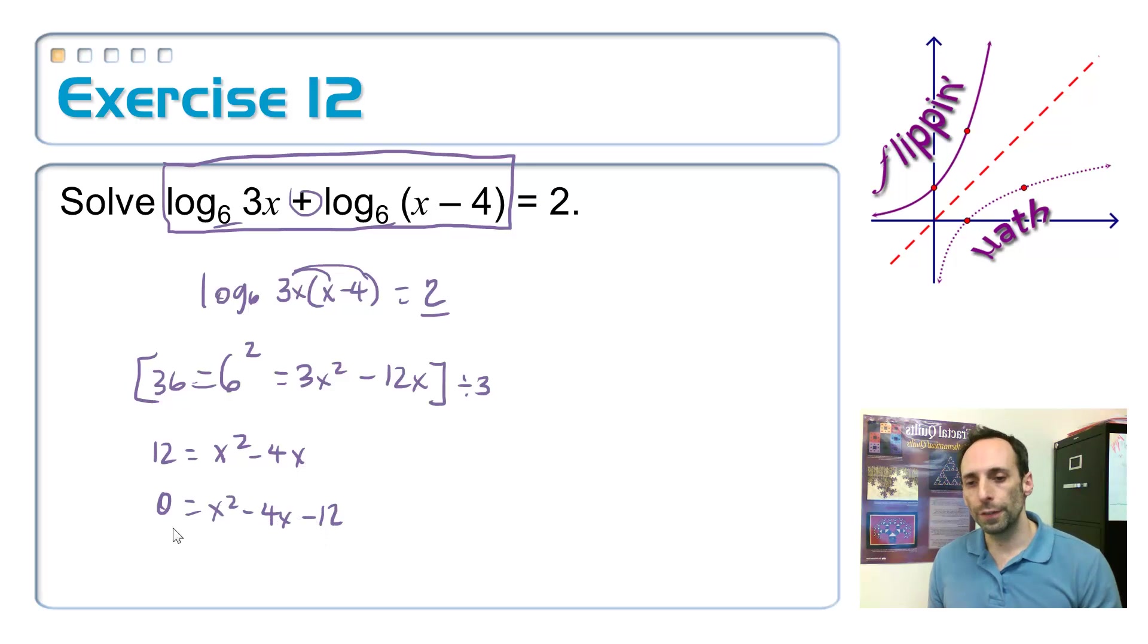Alright, so open some parentheses, x and x. It has to multiply up to negative 12, add up to negative 4. So, how about minus 6 and a plus 2, which means that x is equal to 6 or negative 2.